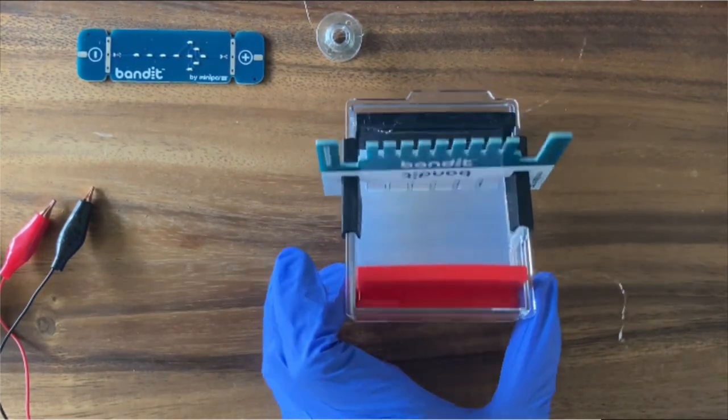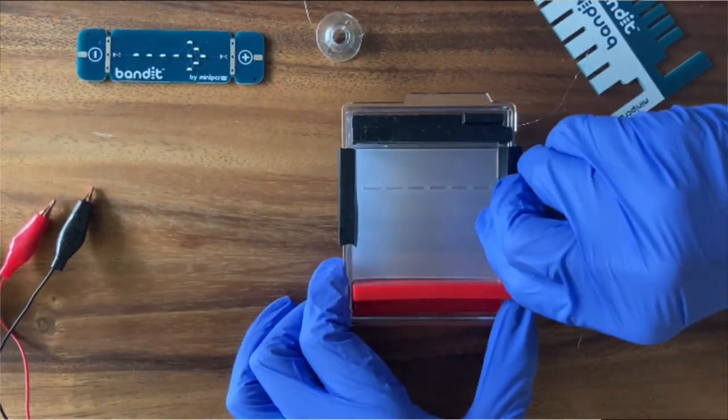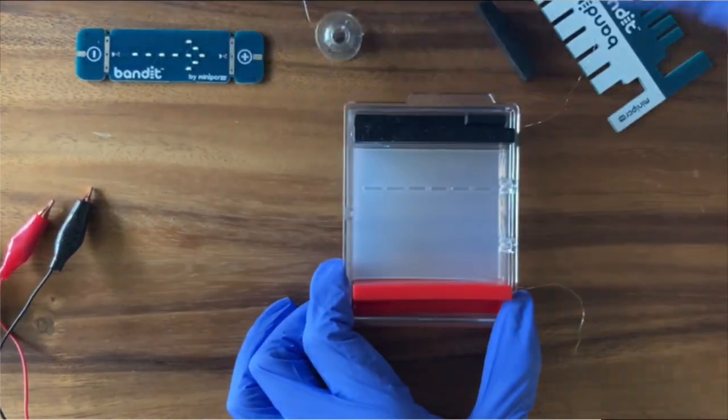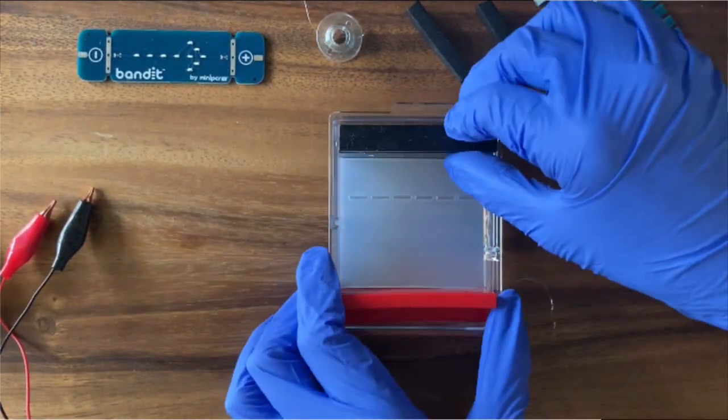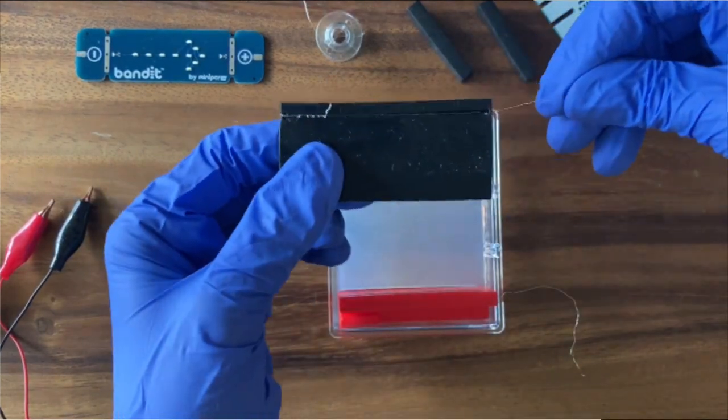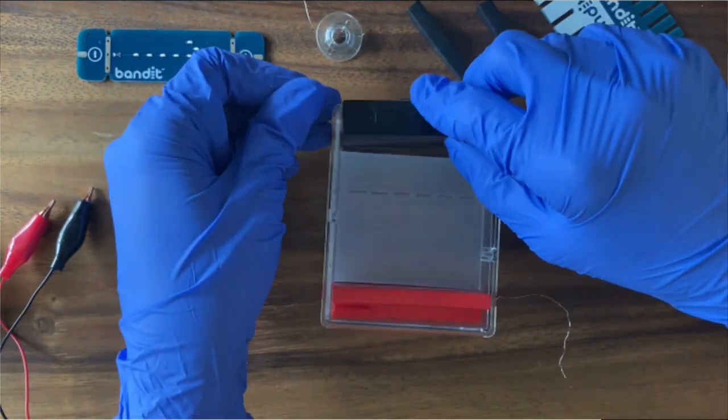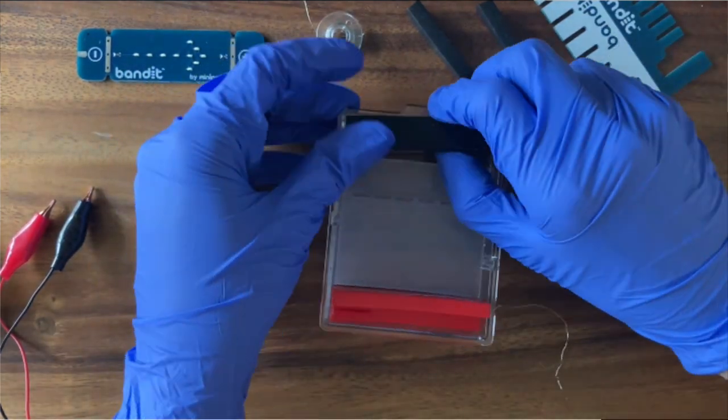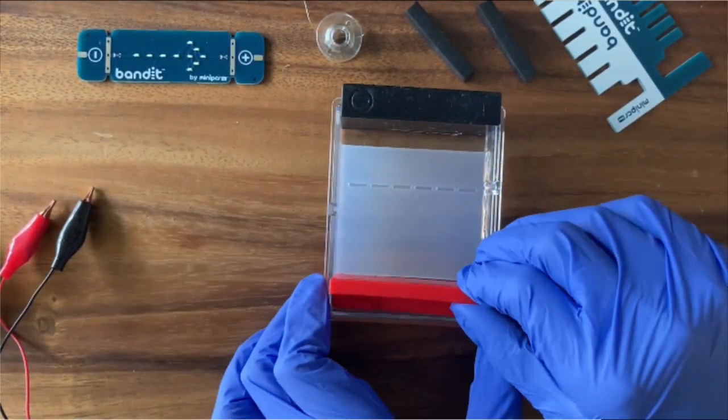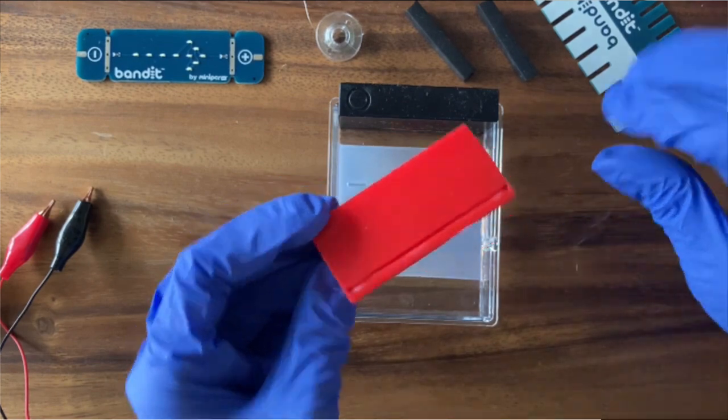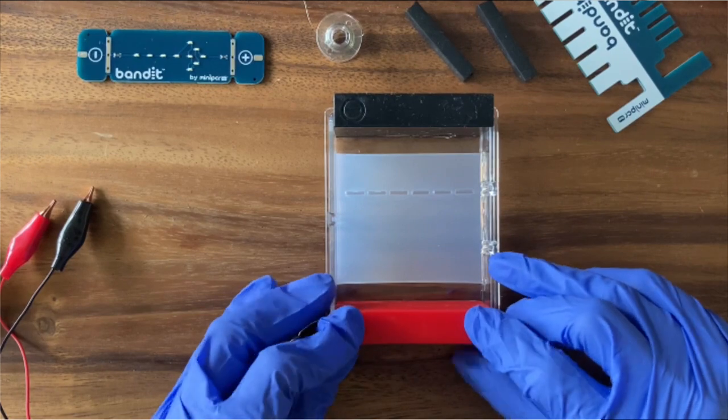Here's our gel ready to run. It's hardened at this point. I'm going to pull the comb out and pull the comb supports off the sides. You can see the wells that the comb left behind. They look just like we want them to. Nice little rectangular pockets. I'm going to take my electrode dams now and flip them from dam mode back into electrode mode. If I flip them upside down, that'll place the electrode wire right at the bottom of the chamber and it'll leave this end of the electrode free for me to clip onto.